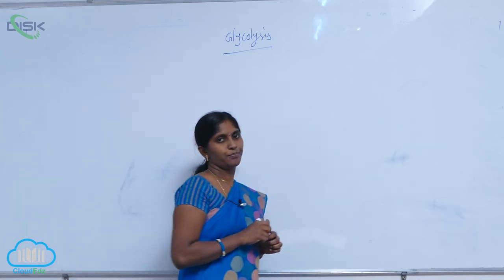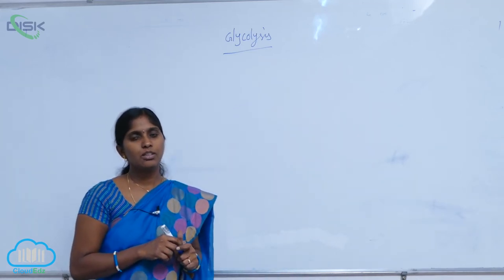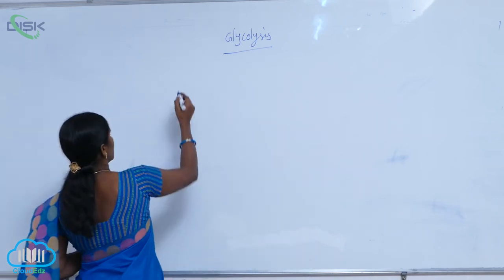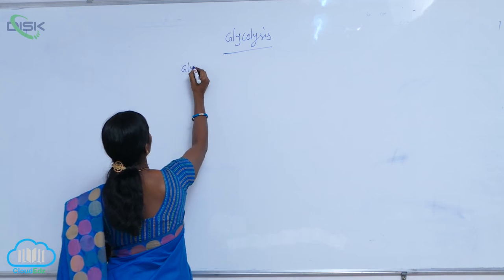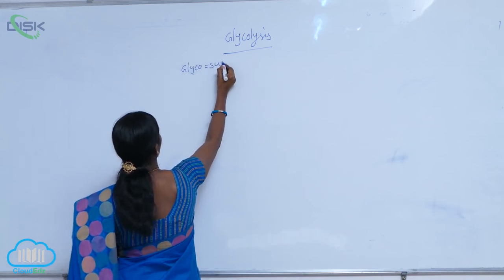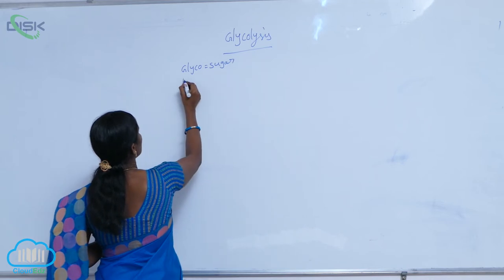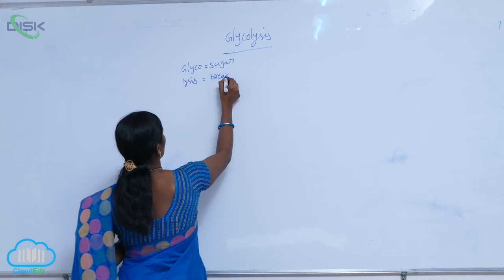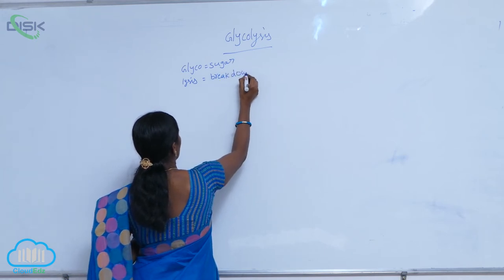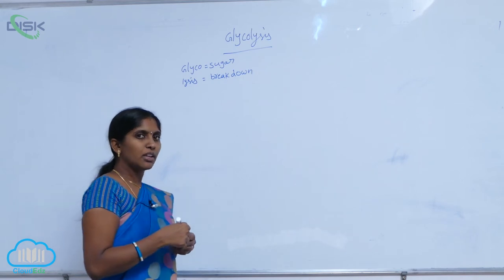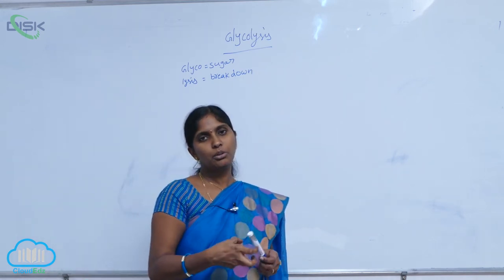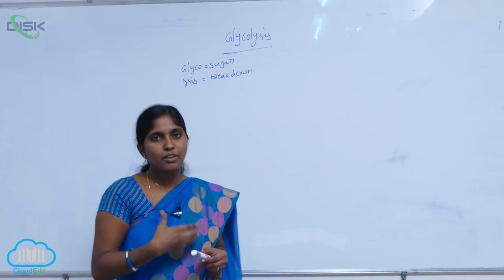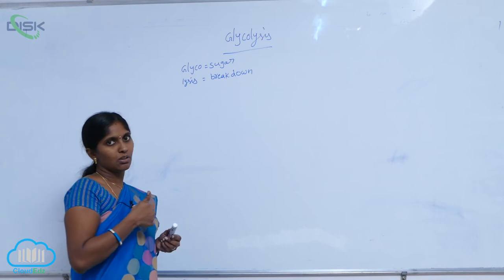Glycolysis. The word glycolysis combines two Greek roots: glyco means sugar, and lysis means breakdown. It means the sugar molecule is broken down into two pyruvic acid molecules. This phenomenon is called glycolysis.